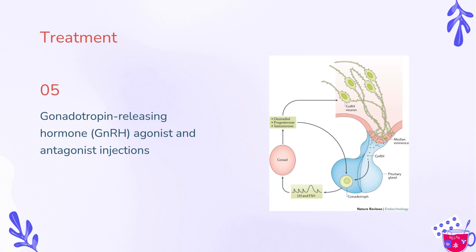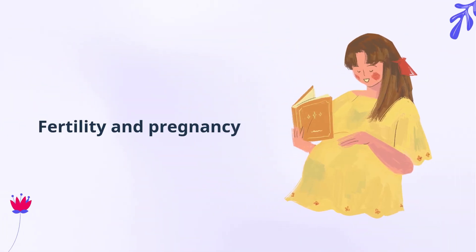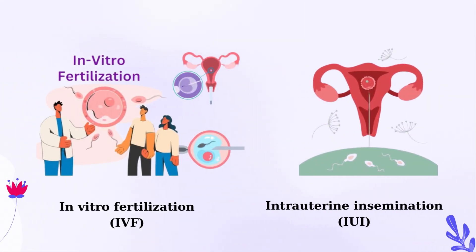Gonadotropin-releasing hormone, GnRH, agonist and antagonist injections help to control the levels of luteinizing hormone, LH, your body makes, which is needed for ovulation. If fertility and pregnancy are your goal, and lifestyle changes and/or medication don't help treat your anovulation, there are still options. Talk to your healthcare provider or a fertility specialist about in vitro fertilization, IVF, or intrauterine insemination, IUI.